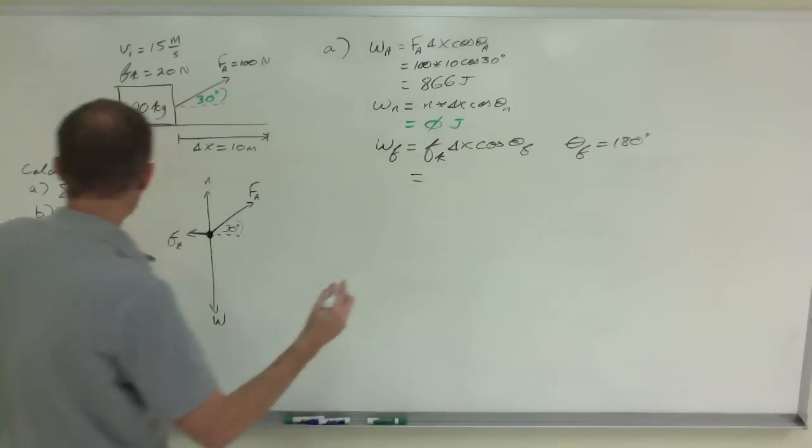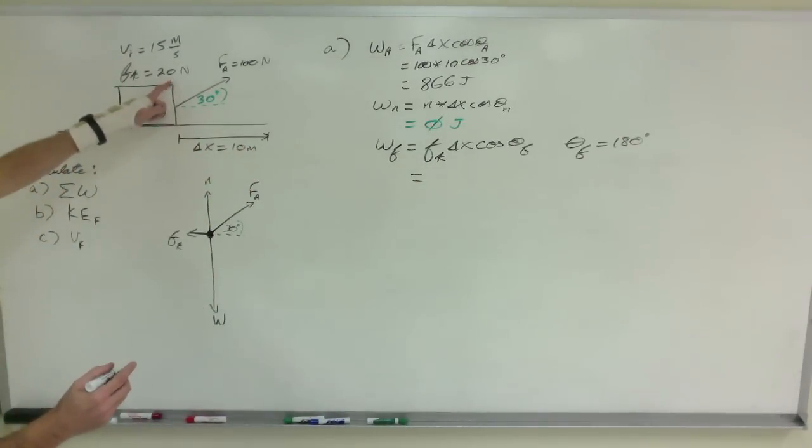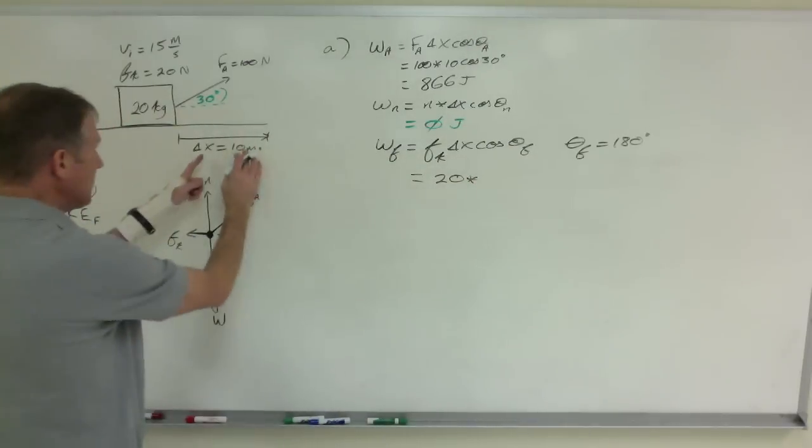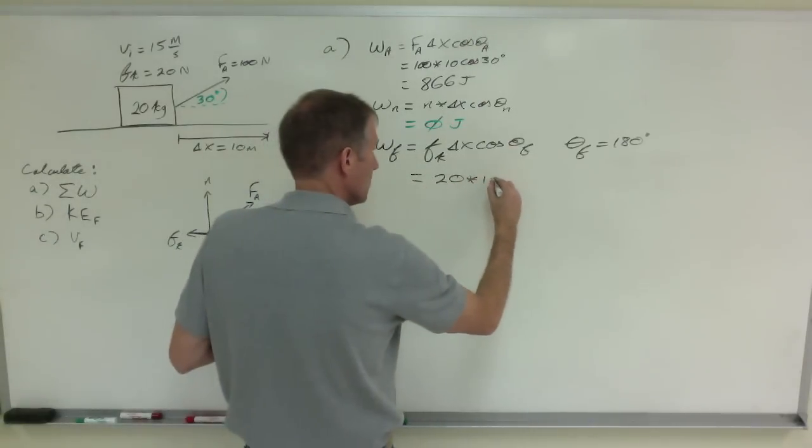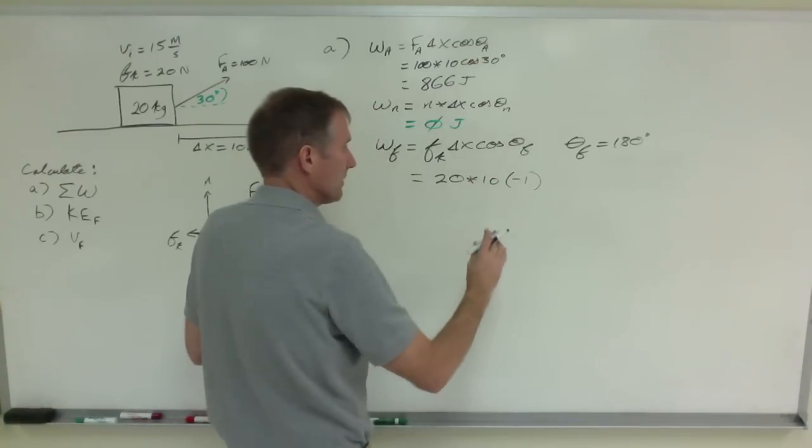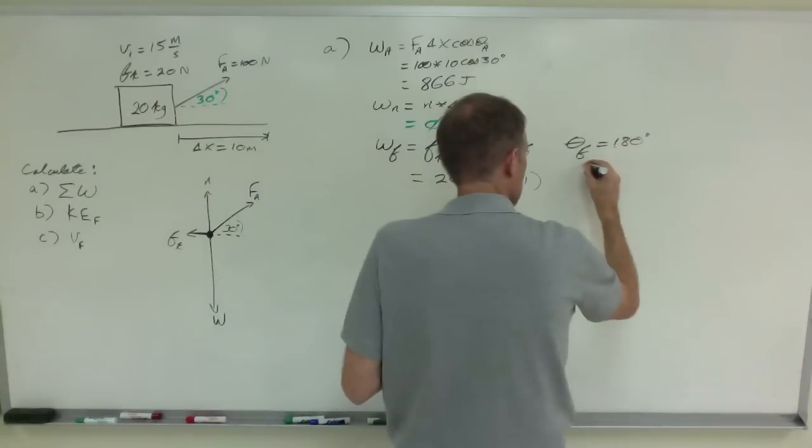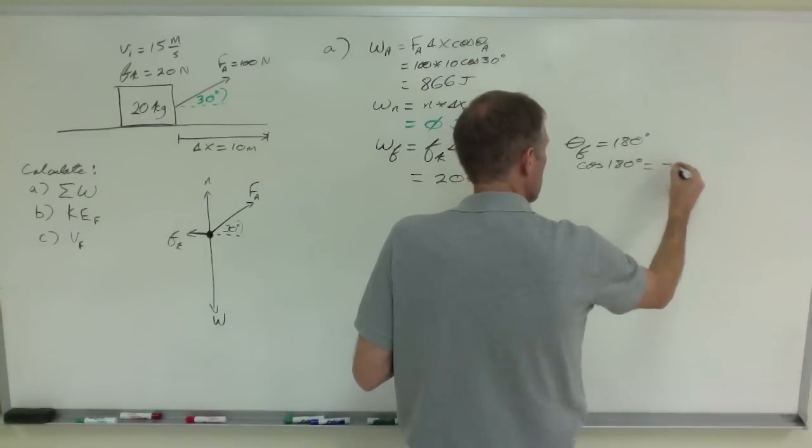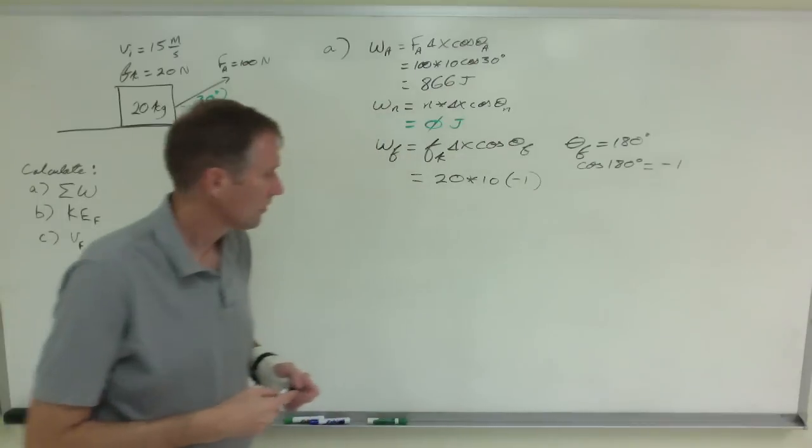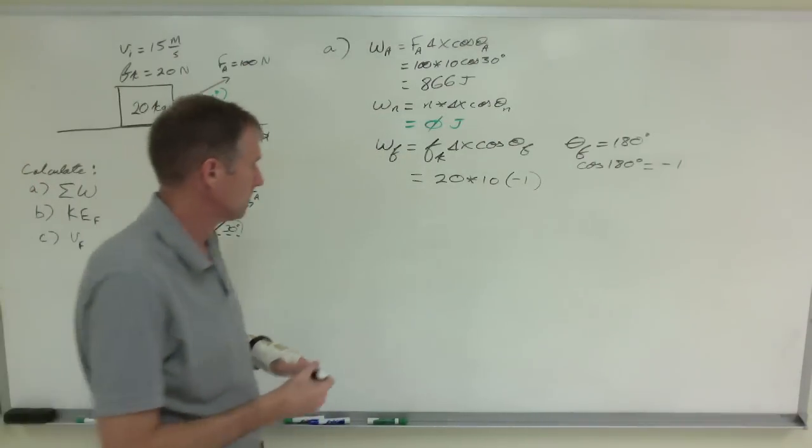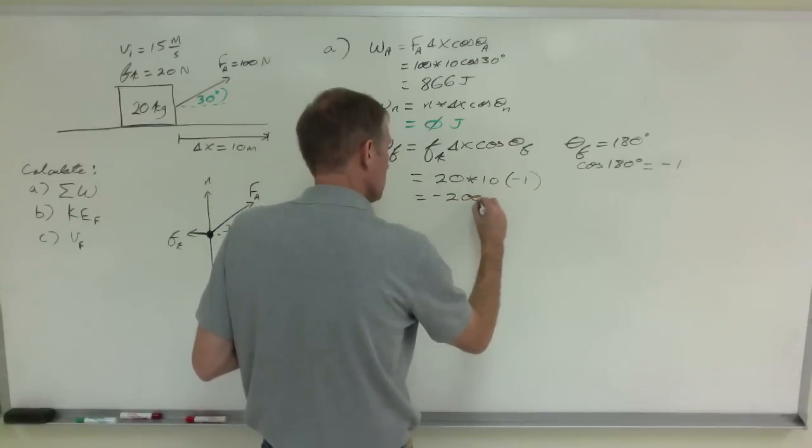So the force of friction I said was 20 Newtons times a displacement of 10 meters times negative one, cosine of 180. The cosine of 180 degrees is negative one. So friction always comes out to be negative because it's always taking energy out of the system. That's negative 200 joules.